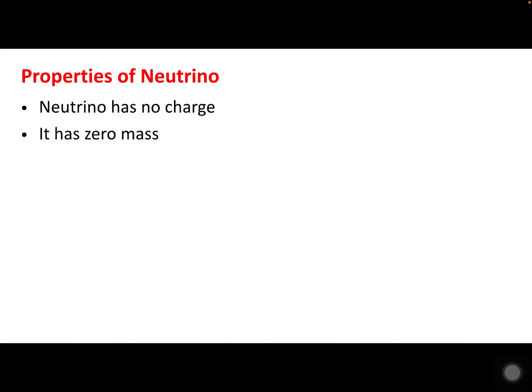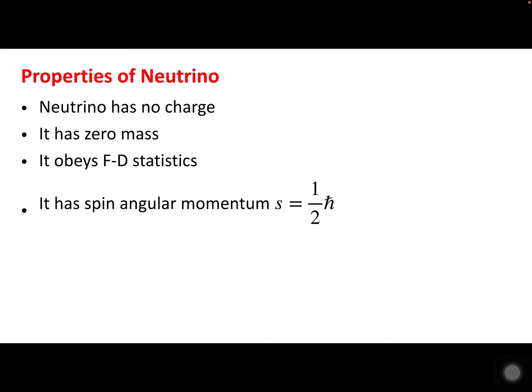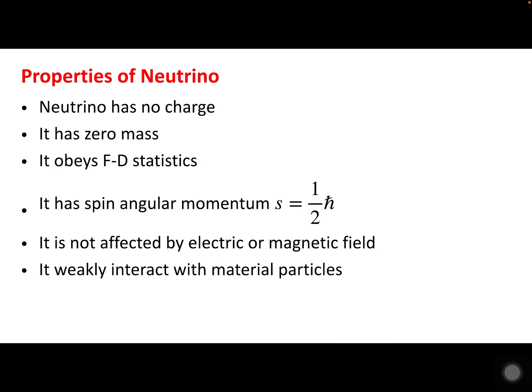The properties of the neutrino are: it has no charge; it has zero mass; it obeys Fermi-Dirac statistics; it has spin angular momentum s equal to half h-cross; it is not affected by electric or magnetic fields; and it weakly interacts with material particles.